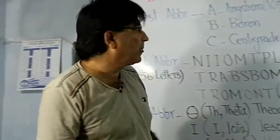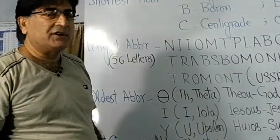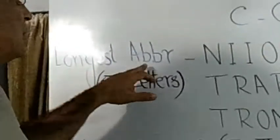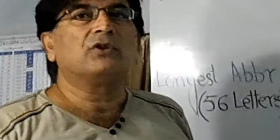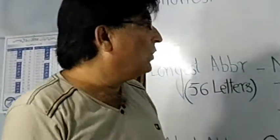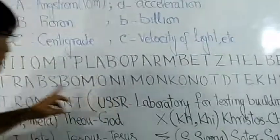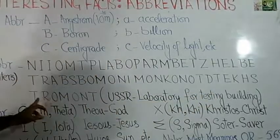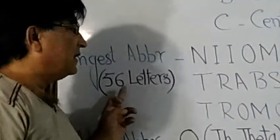The second fact about abbreviation is the longest abbreviation. Previously, the longest abbreviation consisted of 26 letters, but now I have written a longest abbreviation which I have formed. It comprises about three lines and contains 56 letters.